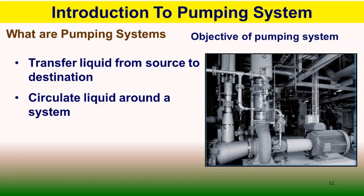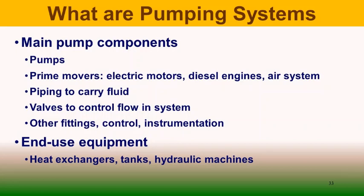The main components of a pumping system are pumps, prime movers (which may be electric motors, diesel engines, or pneumatic systems), connecting pipings, valves to control and isolate flow, other fittings, controls and instrumentation. End-use equipment such as heat exchangers, tanks, and hydraulic machines have different requirements like pressure and flow, and the pumping system components and configurations are determined by these requirements.